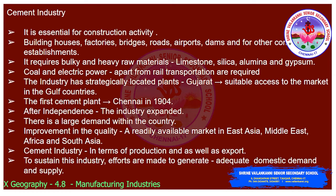The industry has strategically located plants in Gujarat which has suitable access to the market in the Gulf countries. The first cement plant was set up in Chennai in 1904. After independence, the industry expanded and there is a large demand within the country. It has also created a readily available market in East Asia, Middle Asia, Africa and South Asia as it has improved in quality. This industry is doing well in terms of production as well as export, and efforts are made to generate adequate domestic demand and supply.